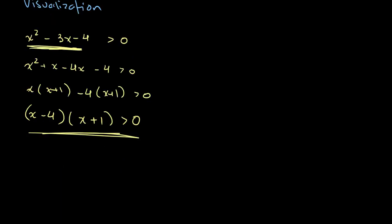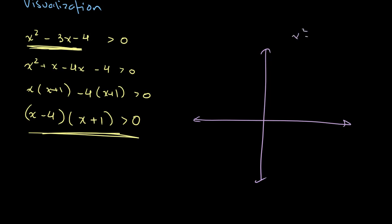So now if we were to draw this on a graph, we would have our y-axis and our x-axis. The graph of x squared minus 3x minus 4 has one intercept at x equals 4 and one intercept at x equals negative 1. Since it has a minimum point, our graph will look like a upward-opening parabola going up on both sides.